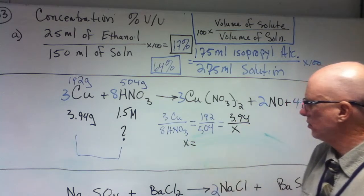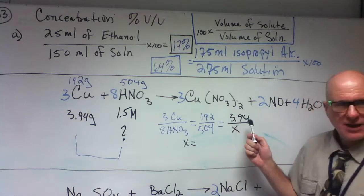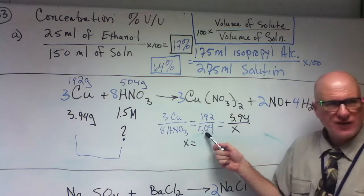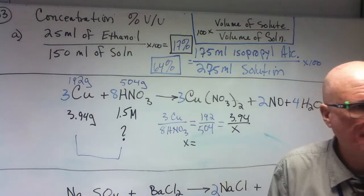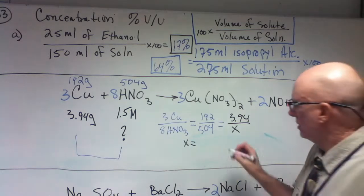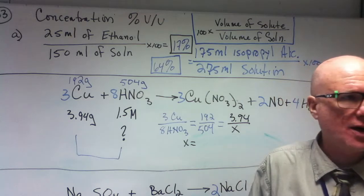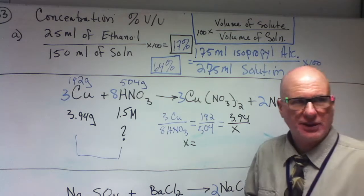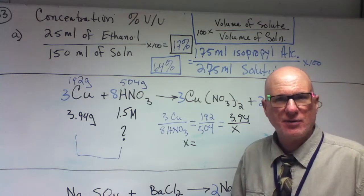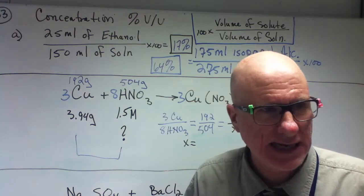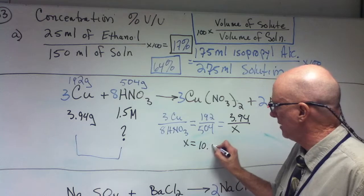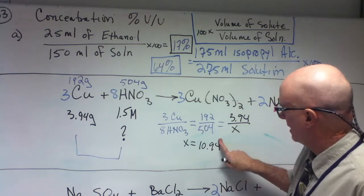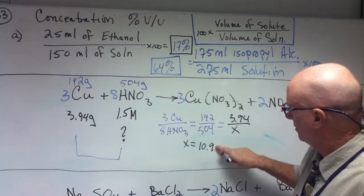So 3.94 is to X. X equals what? 3.94 times 504 divided by 192. X equals 10.3425. All right, don't go crazy, otherwise you'll be arrested by the significant figure police, Gabby. That's going to be 10.34.